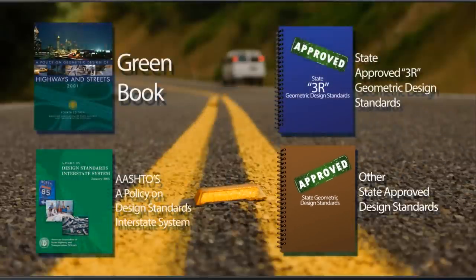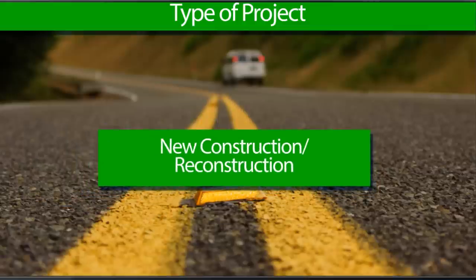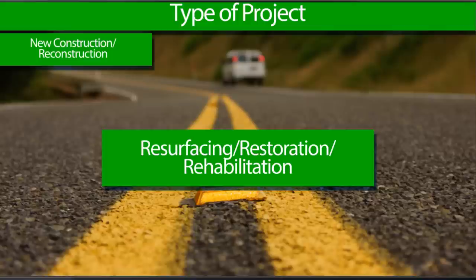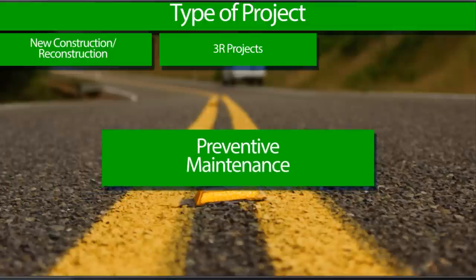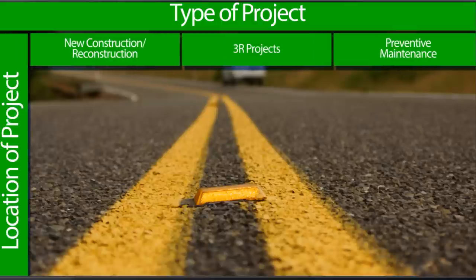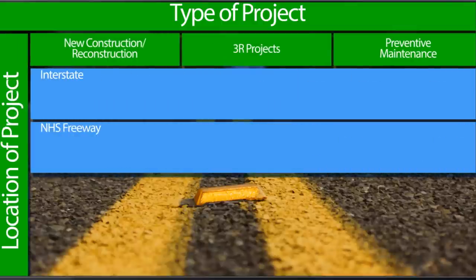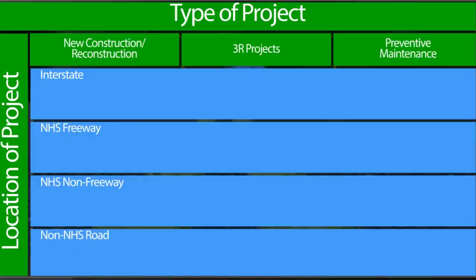To determine which design requirements apply to your highway project, you first should consider the type of project and where it's located. Project types generally fall into one of three categories based on scope of work: new construction or reconstruction projects; resurfacing, restoration, or rehabilitation projects, more commonly referred to as 3R projects; and preventive maintenance projects. Geometric design requirements apply to projects on one of the following four categories of roads: an interstate, an NHS freeway, a non-freeway NHS route, or a non-NHS road.